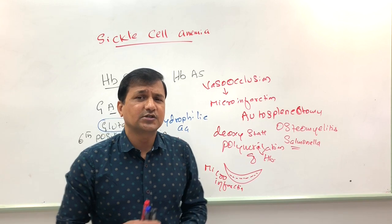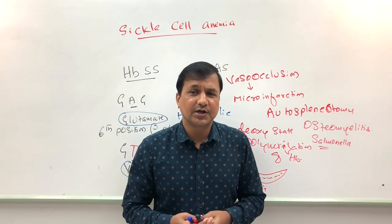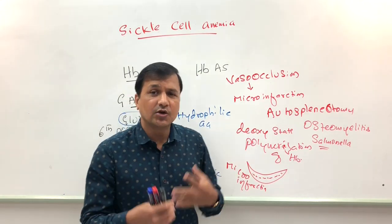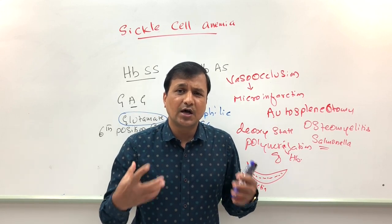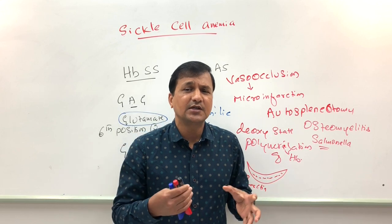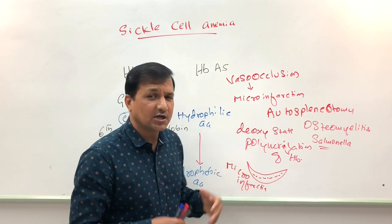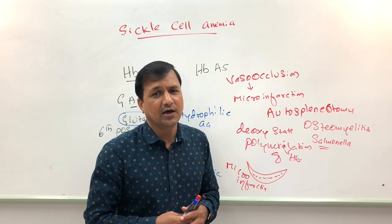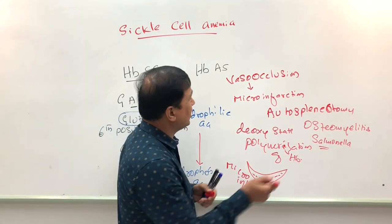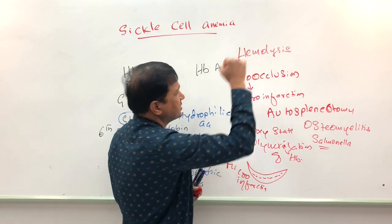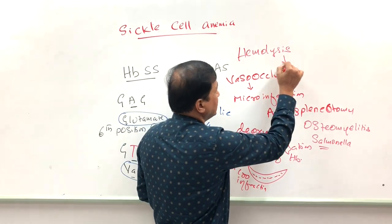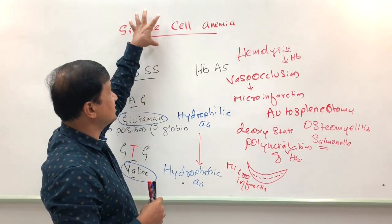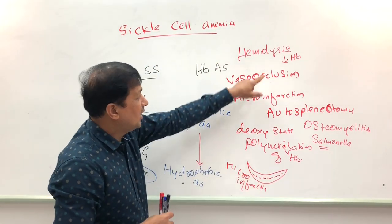Micro-infarctions can also lead to leg ulcers, and repeated infections can continue. Sickle-shaped red blood cells are continuously removed from circulation — especially by the spleen — causing continuous destruction of red blood cells in sickle cell anemia patients. More than the normal number of red blood cells are destroyed, leading to continuous loss of hemoglobin. The hemoglobin is converted into bilirubin, causing continuous hemolysis and decreased hemoglobin content — which is why these patients develop anemia.